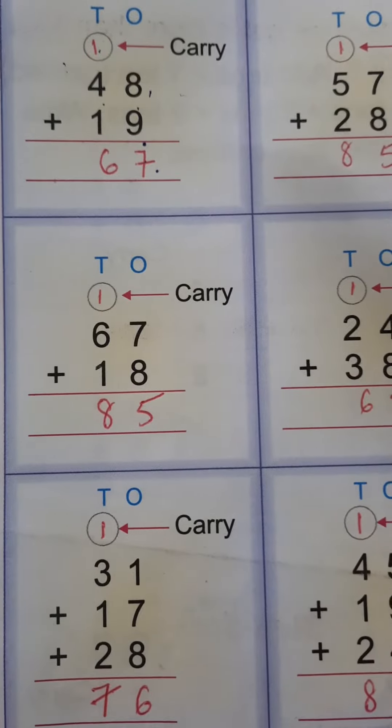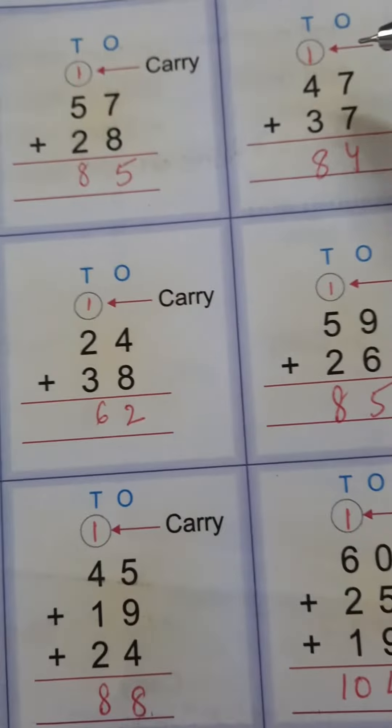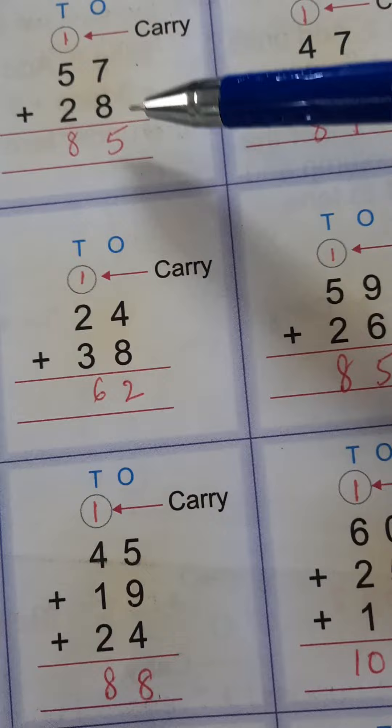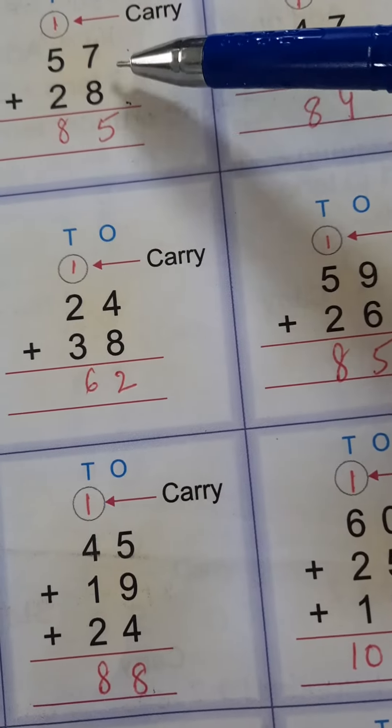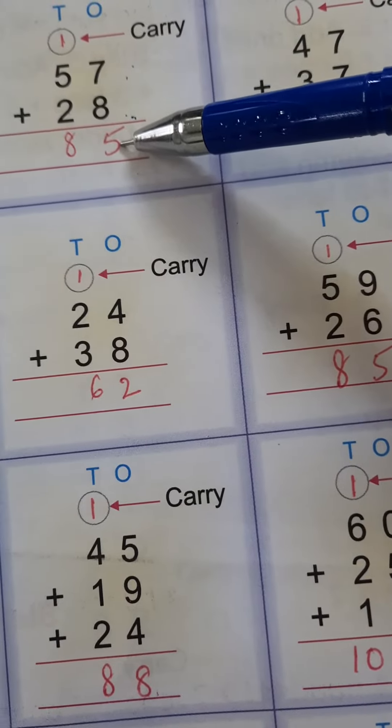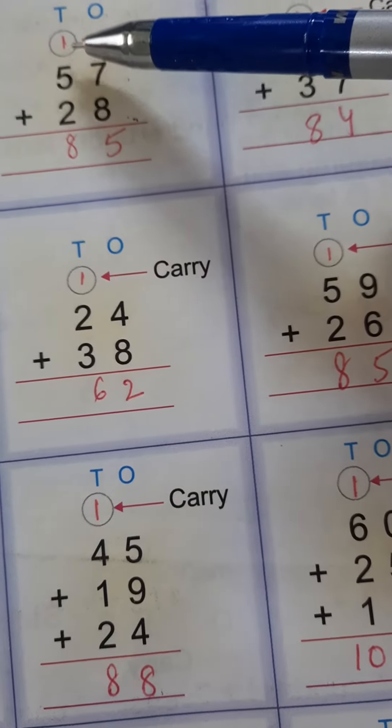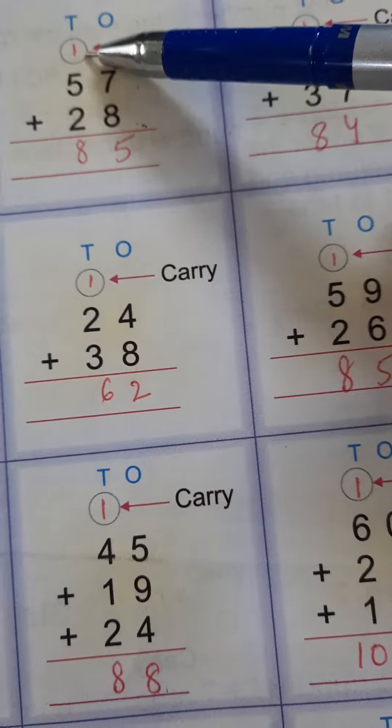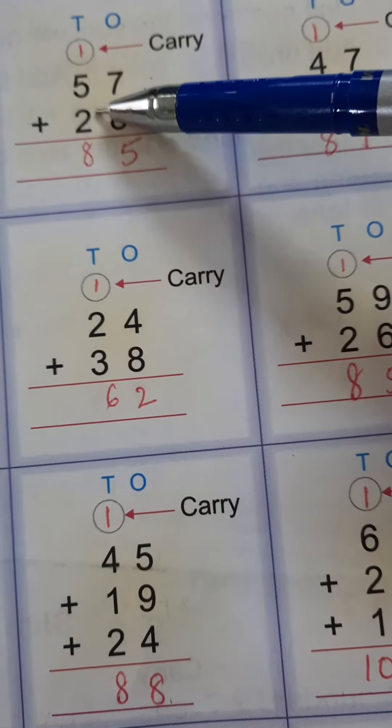Now see the next one: 7 plus 8, we get 15. 1 we are going to carry and 5 we are going to write here. Now 5 plus 1 equals 6, 6 plus 2 equals 8. So the answer is 85.